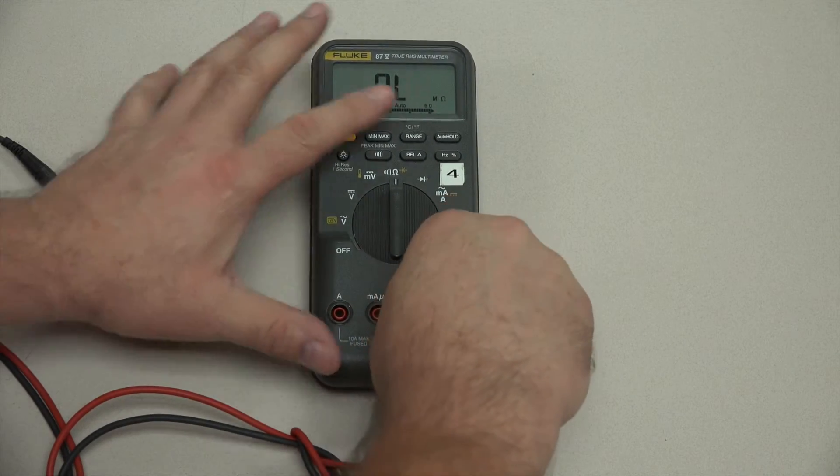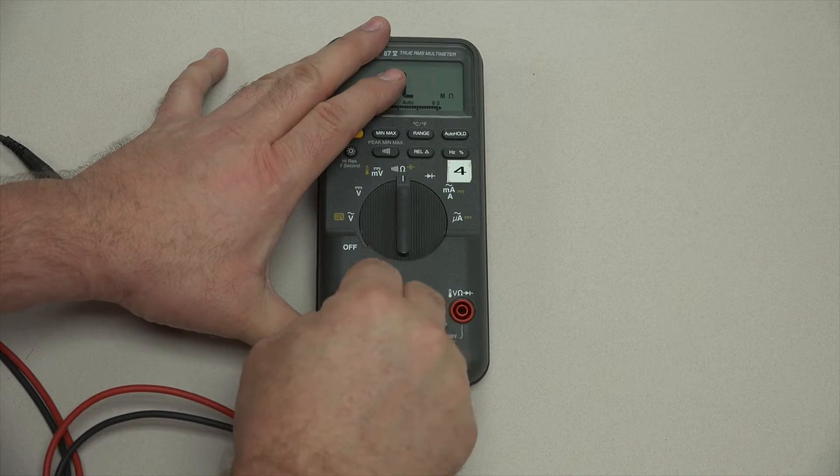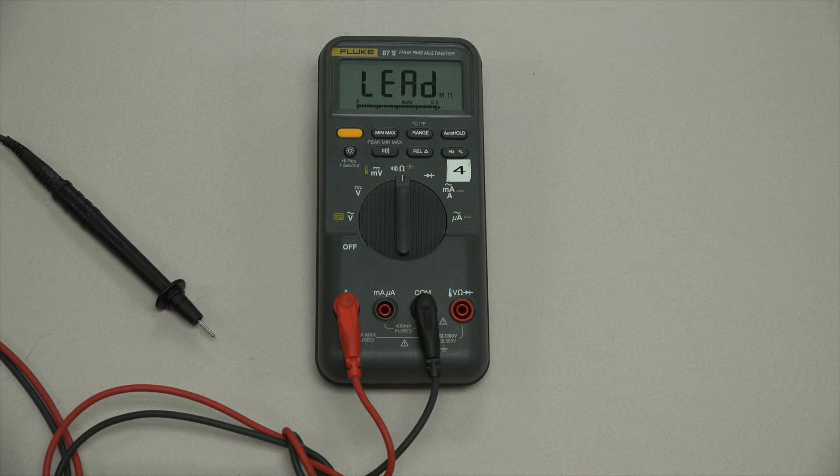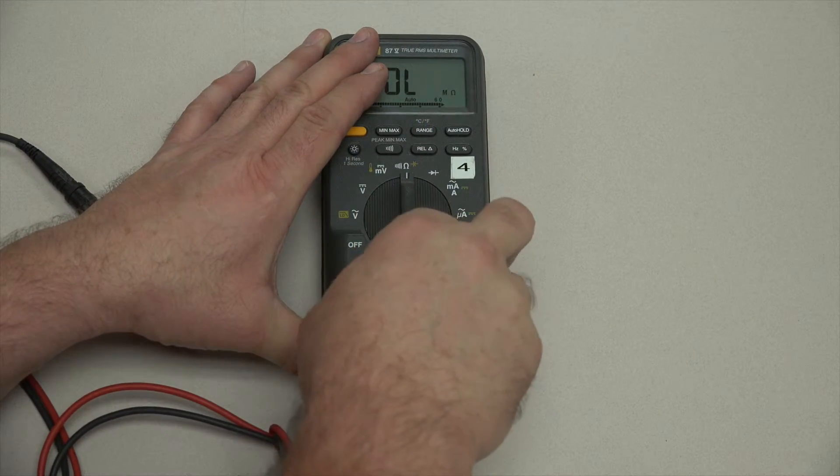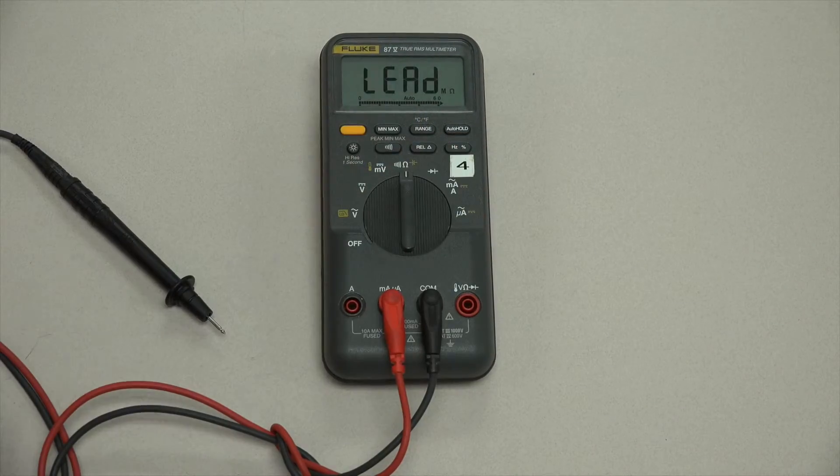I'm going to leave it set up for ohms. I'm going to move the lead to the big A, and here we've got the warning, both the audible and the visual there. Let's go back into milliamp. There you go.